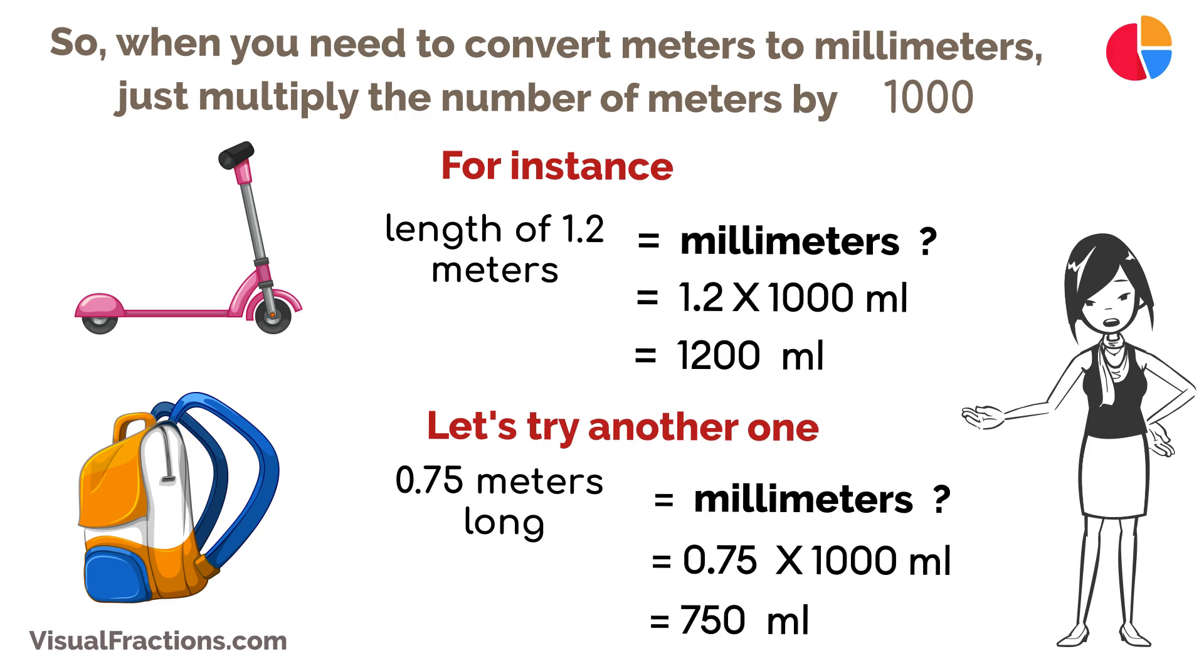And that's it. Just remember, 1 meter is 1,000 millimeters. This makes converting between meters and millimeters simple and accurate, perfect for any situation where precision is key.